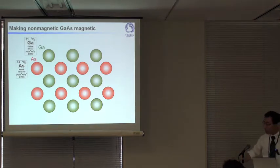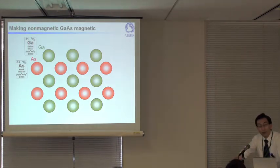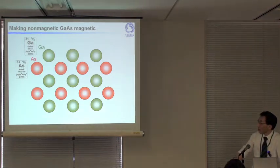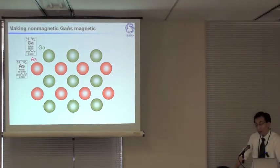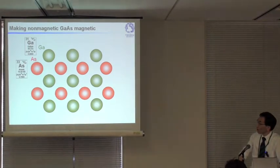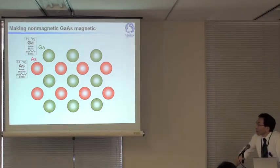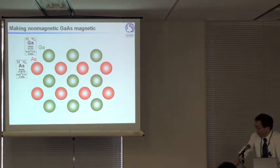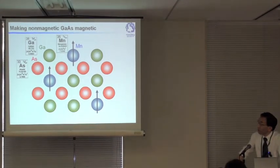At the very beginning, we wanted to make gallium arsenide magnetic. Gallium arsenide, as you know, we can make high-speed transistors and lasers out of it. So we wanted to make it magnetic and combine it with transistors, and hopefully laser and LED structures. Another reason is that we know how to process gallium arsenide, so that if we can make it magnetic, we can make device-like structures out of it.